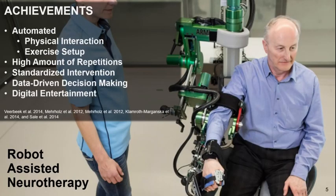Robots like the upper limb exoskeleton in the image were developed to automate physical interaction and exercise setups. They provide high amounts of repetitions, standardized interventions, data-driven decision making, and combined therapy with digital entertainment. These achievements could be demonstrated by various studies.